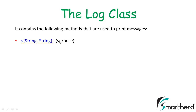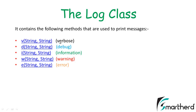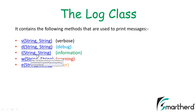There are lots of methods present in the Log class. The first is verbose, second is debug, third is information, fourth is warning, and fifth is the error method. All these methods contain two parameters: the first is a string and the second is a string as well — so verbose, debug, information, warning, and error all take two string parameters.